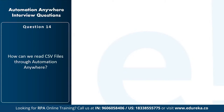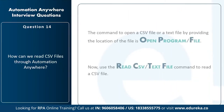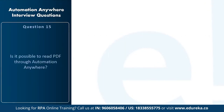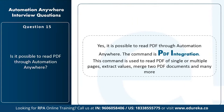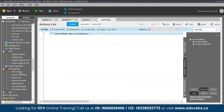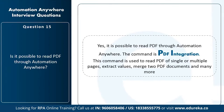Next question: how to read CSV files in Automation Anywhere? First, open the file by providing its location in the Open File activity. Then use the Read CSV File or Read Text File command to read it. Next question: is it possible to read PDFs through Automation Anywhere? Yes — use the PDF Integration command, which supports reading single or multiple pages, extracting values, merging documents, and more. Sub-commands include: PDF to Image, Extract Form Fields, Extract Text, Merge Documents, Split Document, Encrypt Document, and Decrypt Document.